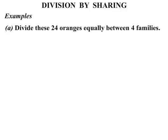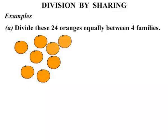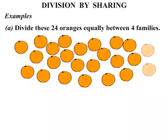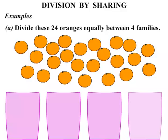Well let's get the 24 oranges to start with — counting up to 24. So there's the 24 oranges. Now between 4 families we're splitting them up, so we have 4 containers there, and let's see how many oranges go in each one.